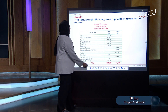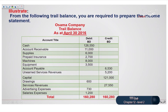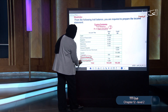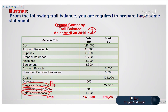Let's take an example of Osama Company for the period of April 2016, which means we are going to make an income statement for Osama Company for one month only. As you can see in our table, we have cash, accounts receivable, and supplies, which are not revenues or expenses, so we don't need those elements. We are going to focus only on revenues and expenses: service revenue, advertising expense, and salaries expense. We will take the amounts of each entry and transfer them to the income statement.